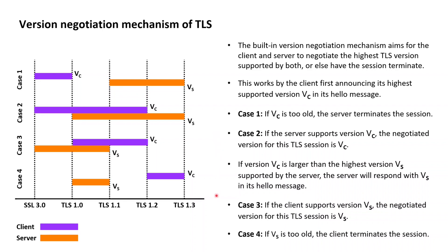The third case is the case where the highest supported version by the client is higher than the highest supported version by the server, but with the client actually also supporting this highest version of the server. In that case, with the server receiving a client hello message announcing a TLS version higher than what it can support, the server replies with a server hello message announcing its own highest TLS version. As the client can also support this older version, the TLS session will proceed with the highest TLS version supported by the server.